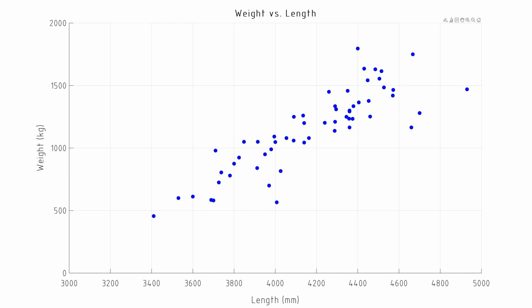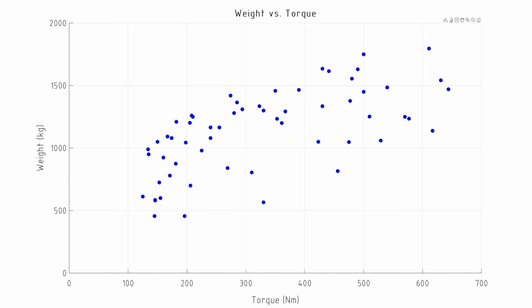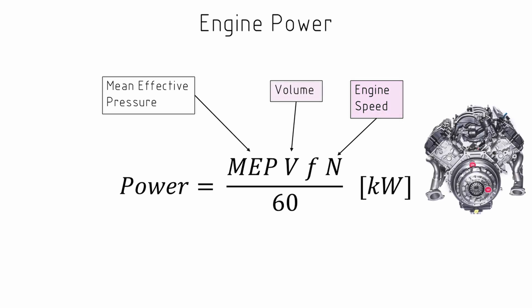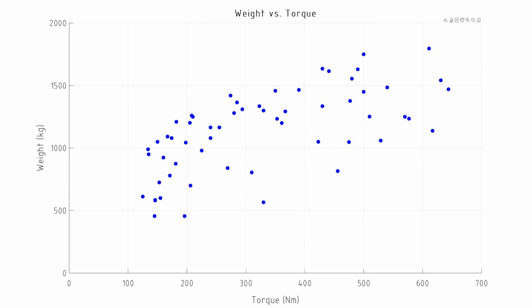Going down the list, torque is more closely related to vehicle weight than power. For a naturally aspirated engine, the two main ways to improve power are increasing engine volume — which generally increases engine size and weight — or allowing that engine to rev higher. A high-revving engine will generally have lower weight because you need to reduce rotating masses, but it's the engine with greater volume that is likely to have the greatest torque. We do need to be careful about correlation versus causation here: is the car heavy because it has a heavy engine, or does it have a heavy, powerful engine because the designers are trying to ensure good performance despite the vehicle's weight?